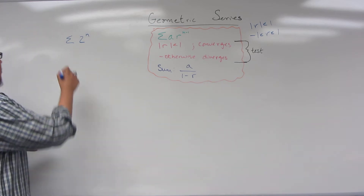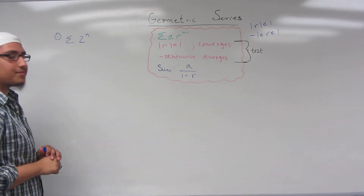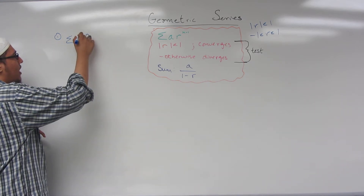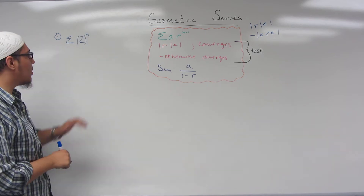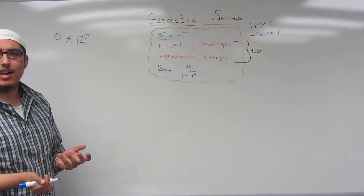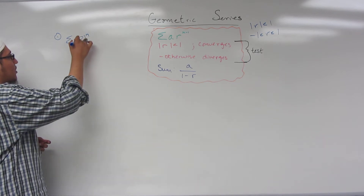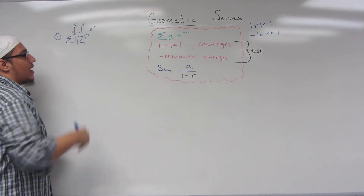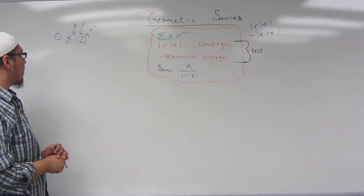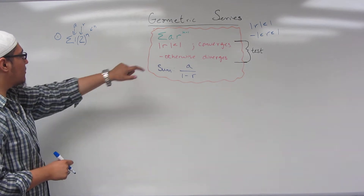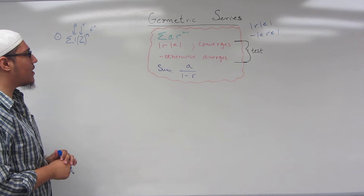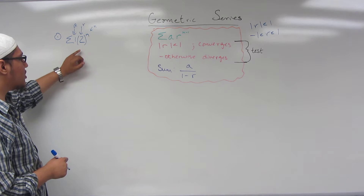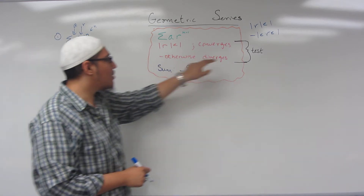Our first example: sigma 2 to the N. We have a constant raised to some N power — this constant is R. We can say A is simply 1, so we have 1 times 2 to the N. Does this series converge or diverge?